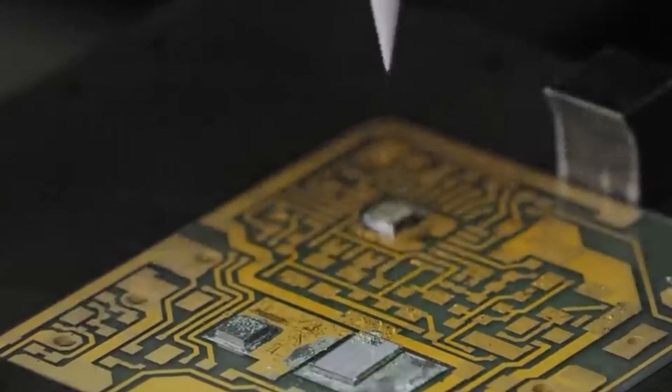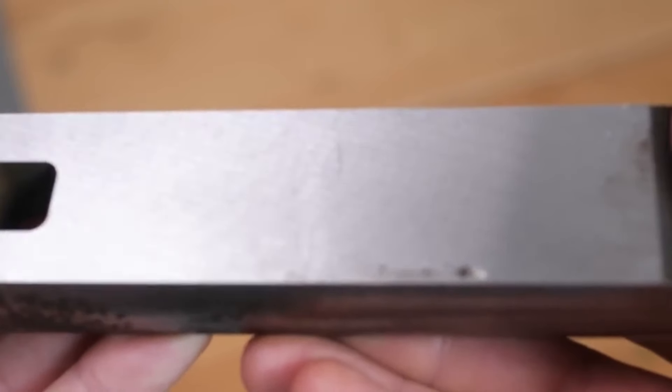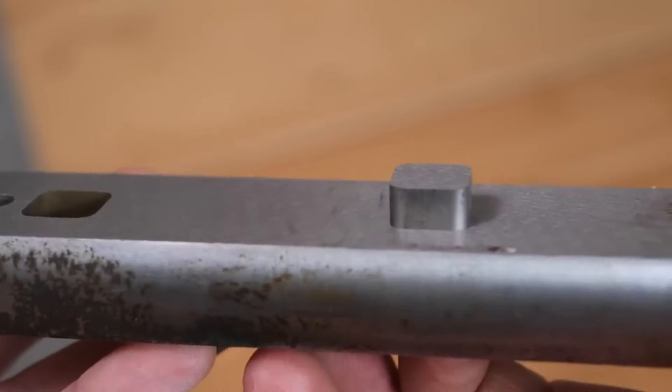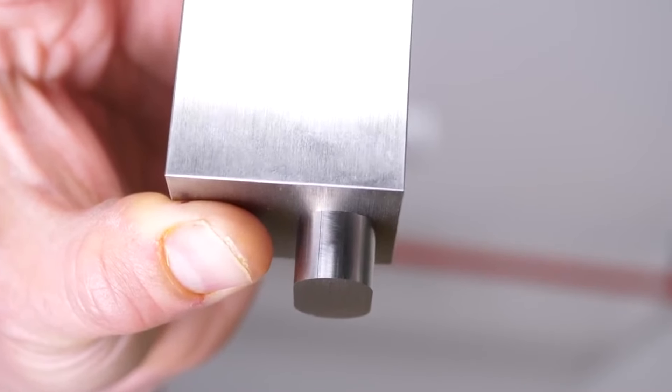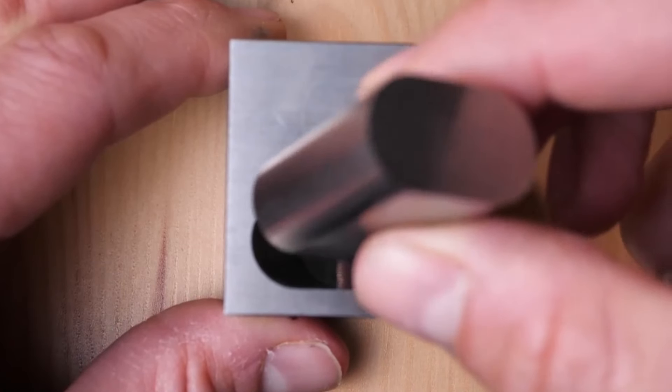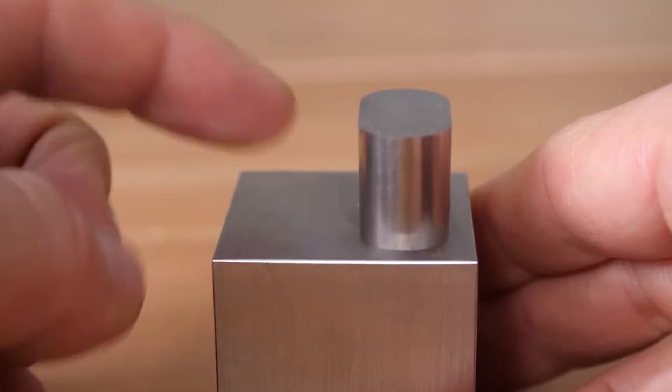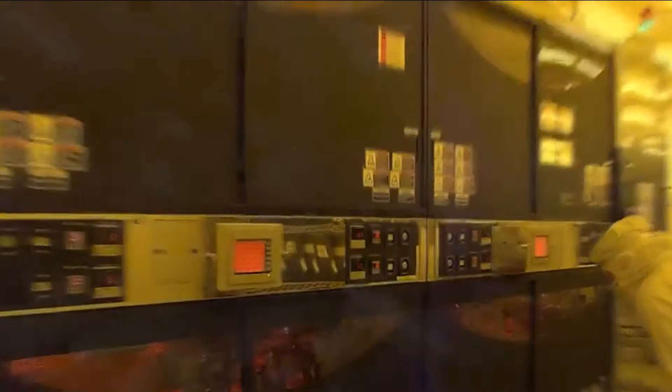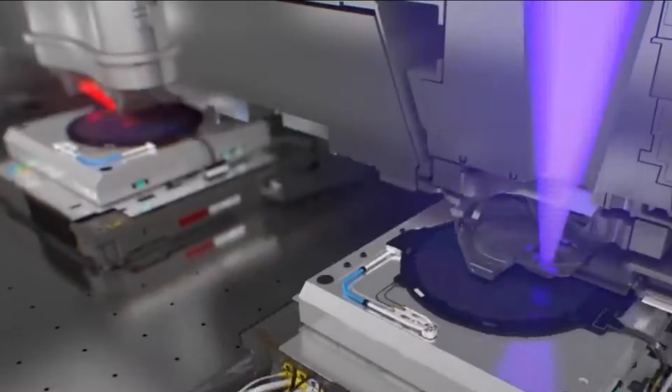Electronics and Semiconductor Industry: In the electronics and semiconductor industry, tungsten plays a crucial role in the production of integrated circuits (ICs) and electrical contacts. Tungsten's excellent electrical conductivity allows for efficient transmission of electrical signals, making it suitable for use in microelectronic devices and components.